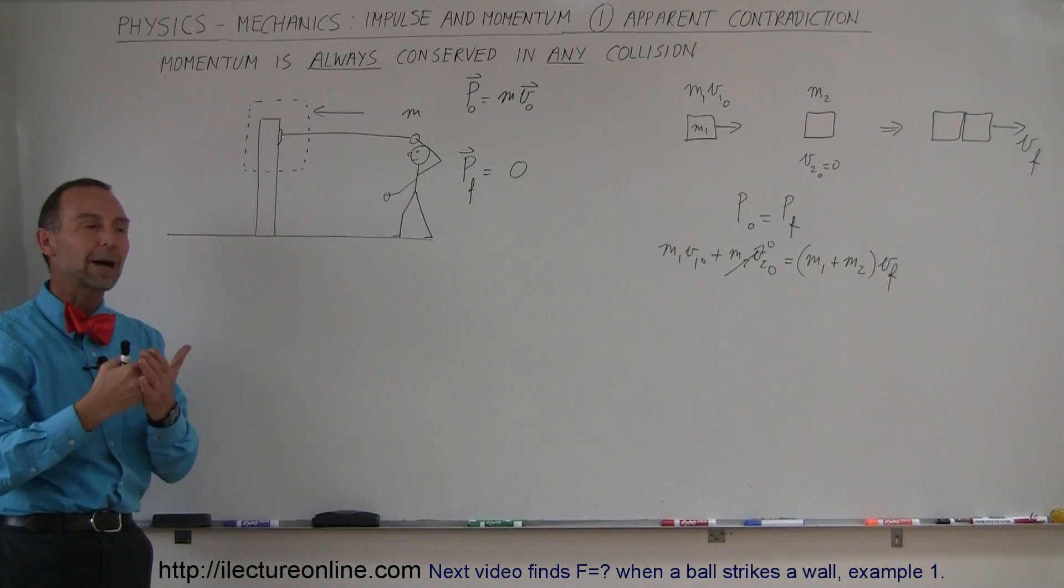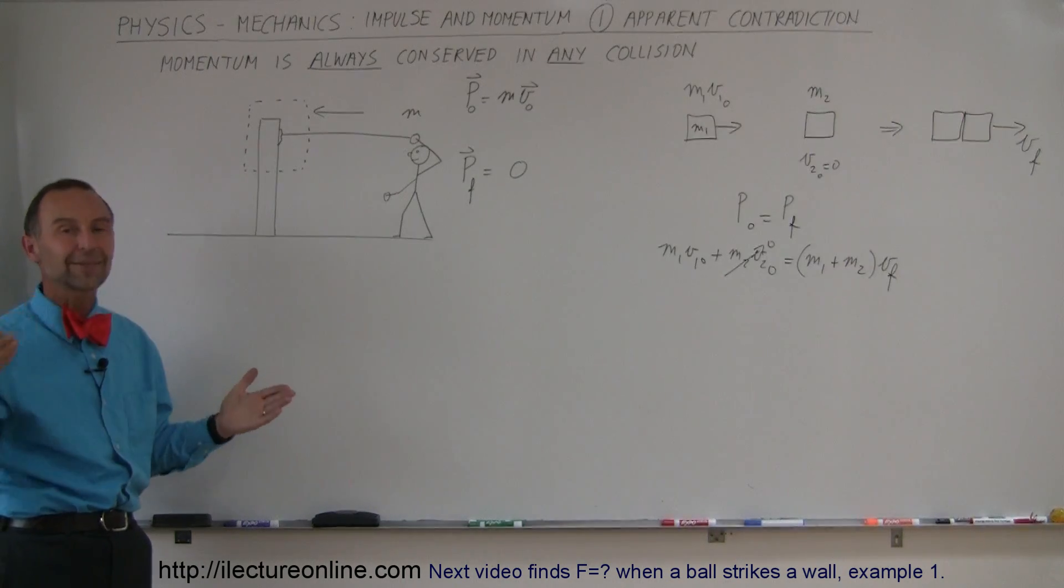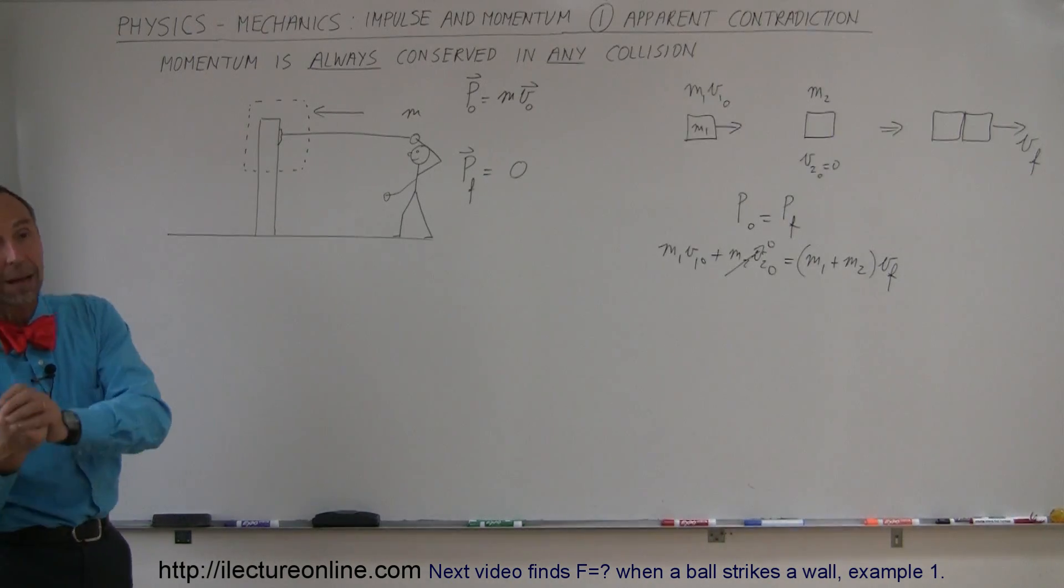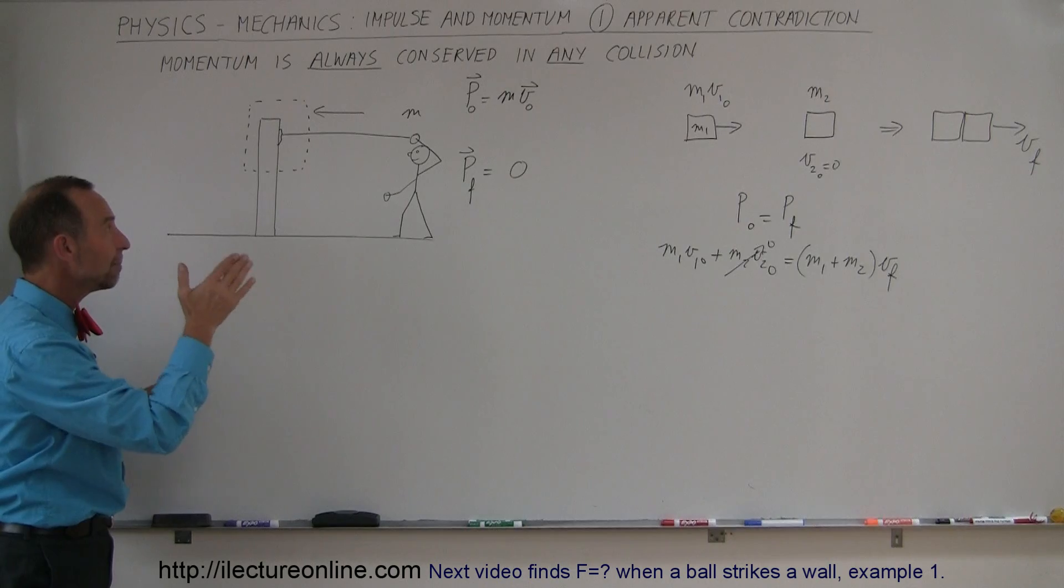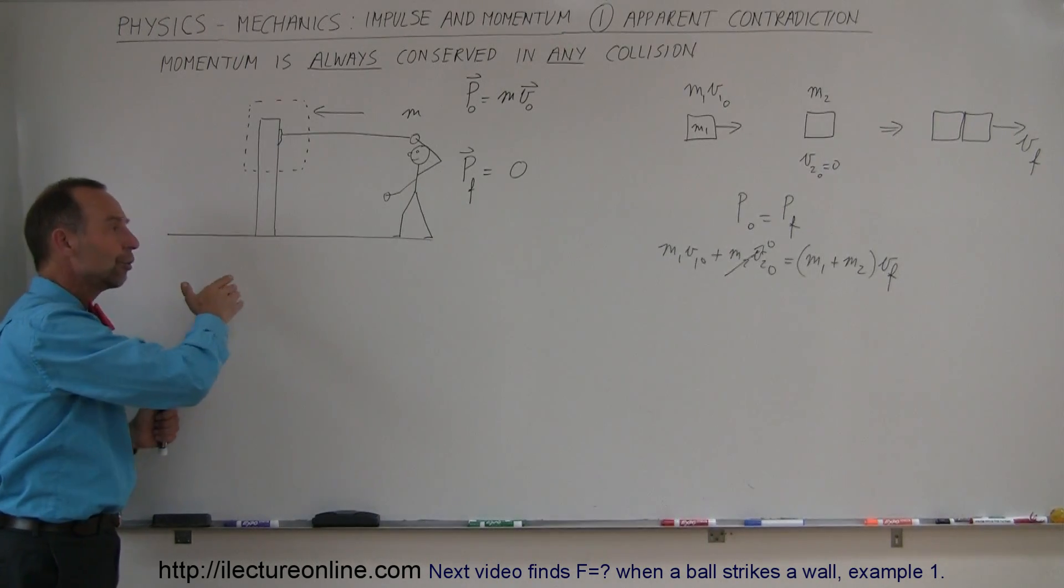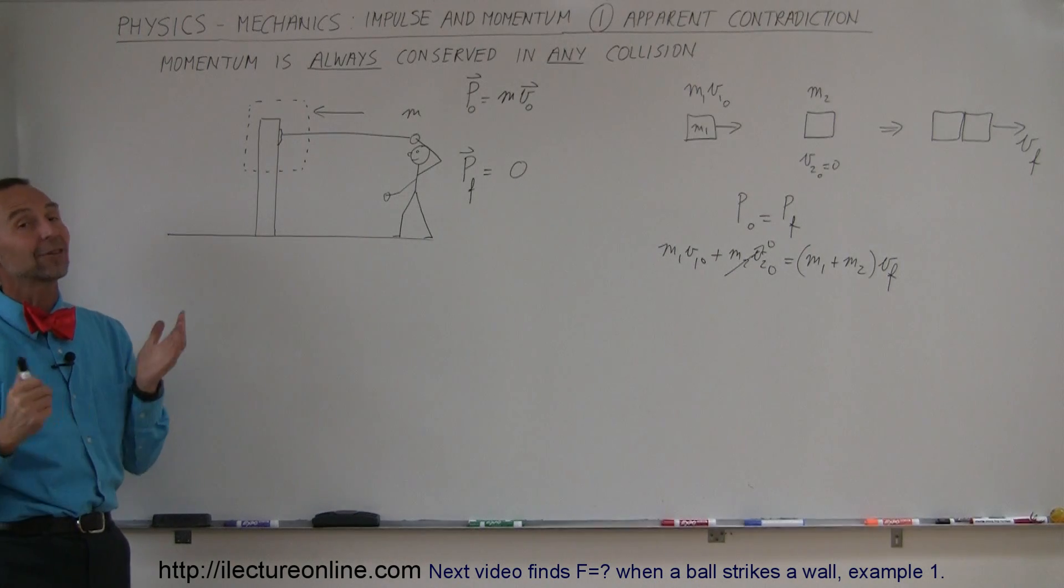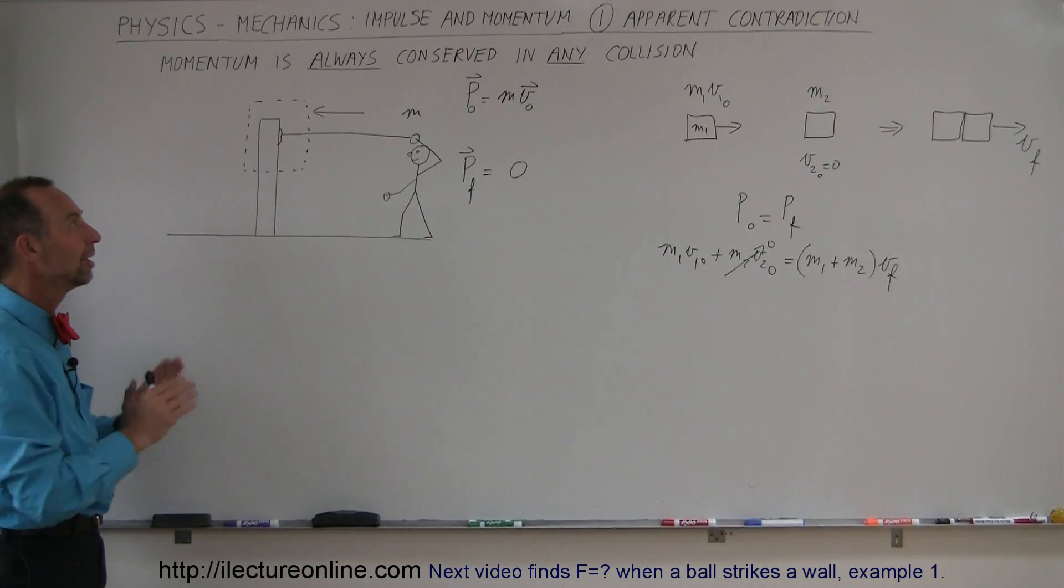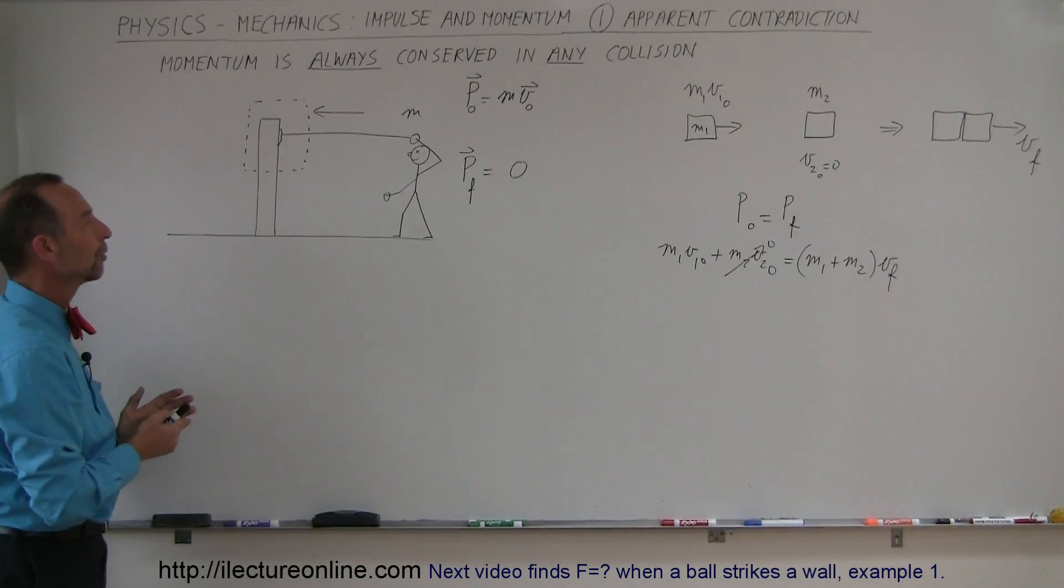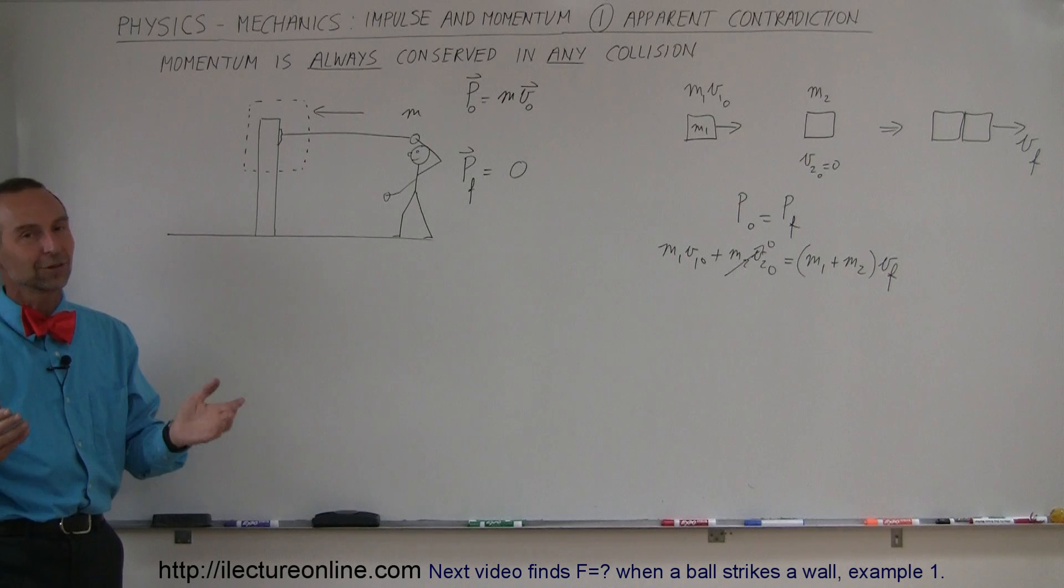But if you take the wall and the Earth all combined with the snowball, momentum is, of course, conserved. And so we have to keep that in mind when we talk about impulse, because impulse usually involves things hitting a wall and bouncing back or a baseball getting hit by a baseball bat. So we have to keep in mind that in some cases, it may appear that momentum is not conserved when it is. And that's why I wanted to bring it to your attention that there seems to be this apparent contradiction, which is not really a contradiction at all. If you take the whole universe into account, the whole Earth, the wall, and the snowball, momentum, of course, is always conserved.